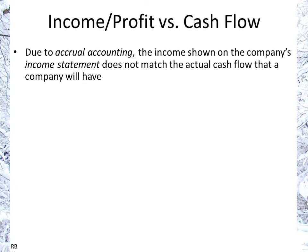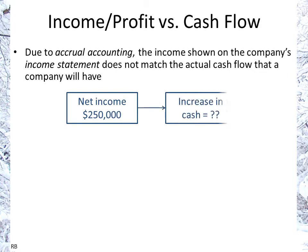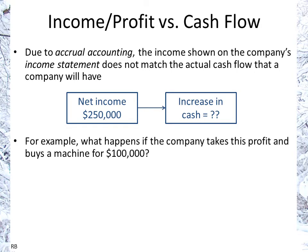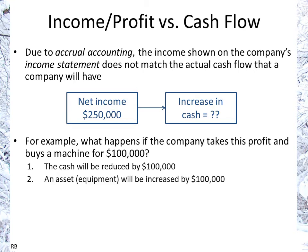Due to accrual accounting, the income shown on the company's income statement is not the same thing as the cash flow. So if we were to have an income of $250,000, what does that mean in terms of increase in cash? It could be $250,000 — more likely it isn't. For example, if the company earns $250,000 and has a cash flow of $250,000, what happens if the company takes that profit and buys a machine for $100,000? Well, the cash would be reduced by the amount of that purchase and an asset will be increased in conjunction with that.